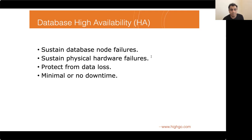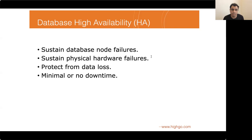Let's start with what high availability is. If you look up the Wikipedia definition, it states: high availability is a characteristic of a system which aims to ensure an agreed level of operational performance — usually uptime — for a higher-than-normal period. Effectively, implementing database high availability means designing a database system that can sustain almost all types of known failures: database failures, physical hardware failures, and software failures. Another important aspect is to ensure there is no data loss in case of any component failure.